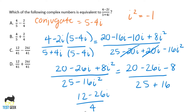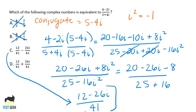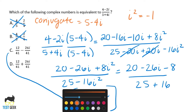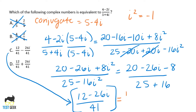Now let's look at our answer choices. A and B don't have any i, so those are out. Looking at C and D: for C, we have 12 over 41 minus 26i over 41. This might look a little different from our answer since we have one fraction, but remember that if you have two terms on top with the same denominator, you can split that fraction into two parts keeping the same denominator. So C is our answer — 12 over 41 minus 26i over 41.